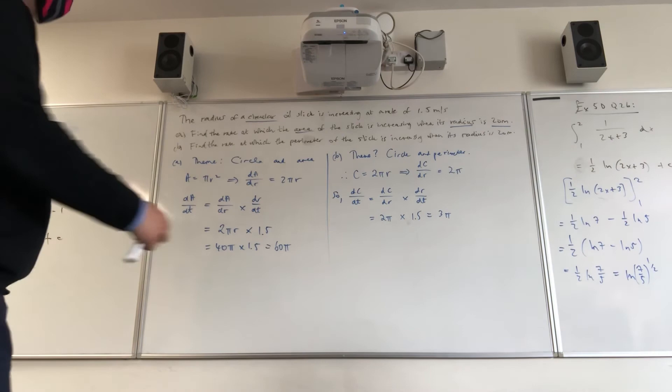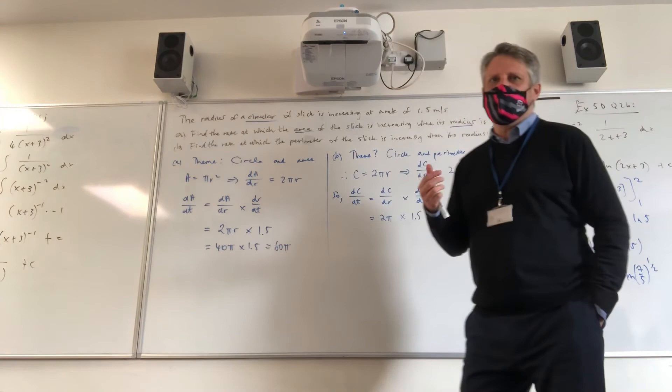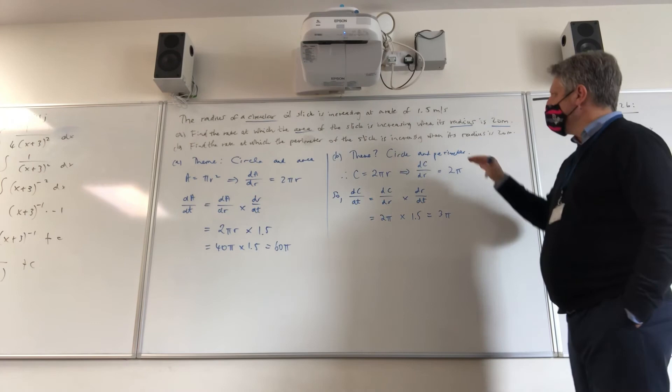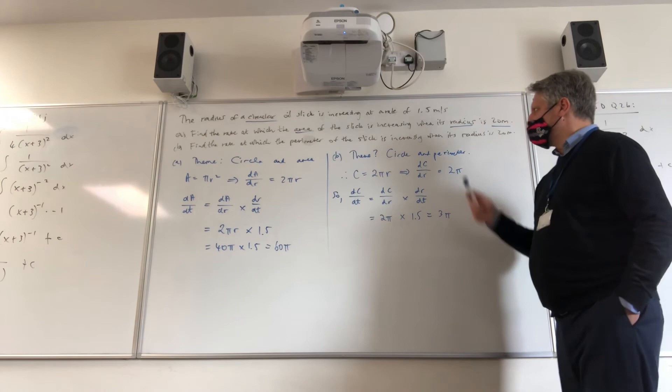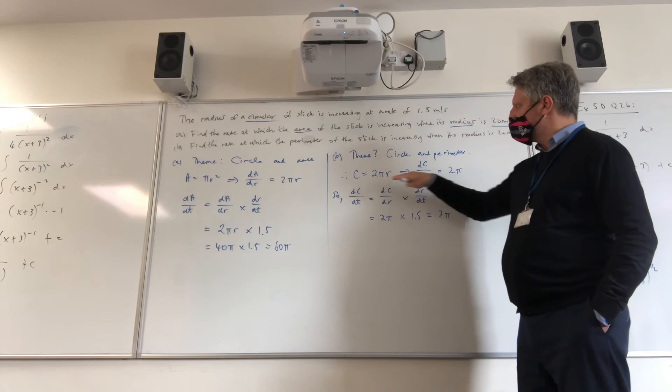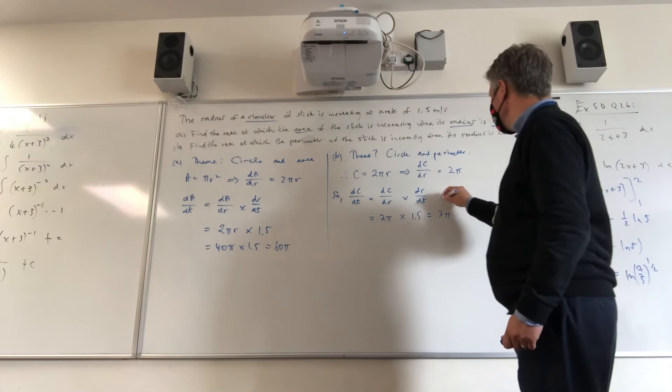So in this instance, we've asked ourselves, what is the theme? What is part B's main theme? Well, it's again a circular world to think that's the theme of the whole question. And then more specifically in part B, the relationship to the perimeter, which we know is the circumference. So that's a good starting point. The circle circumference is 2πr. Let's find out what its derivative is. dC/dr will be 2π.